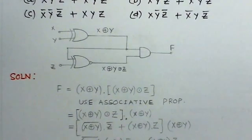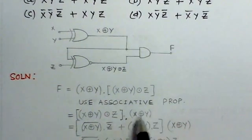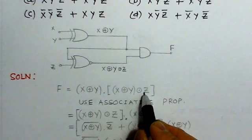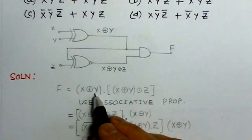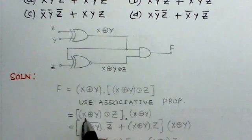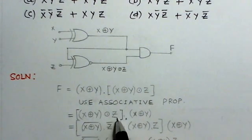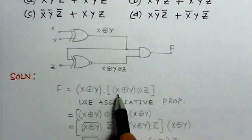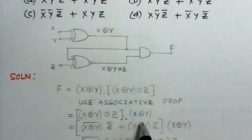Now, we can use the associative property. That means, we associate this Z with the first term. That means X exclusive OR Y exclusive OR Z. And we take this term, X exclusive OR Y, separately.